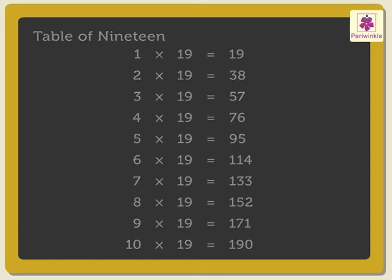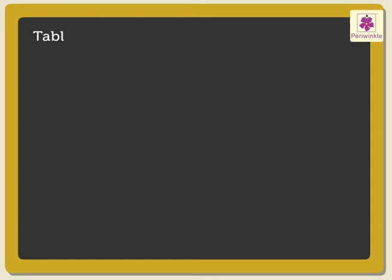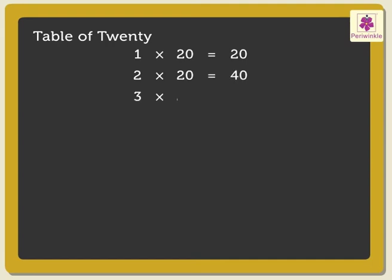Lastly, the table of Twenty: 1 × 20 is 20, 2 × 20 are 40, 3 × 20 are 60, 4 × 20 are 80.